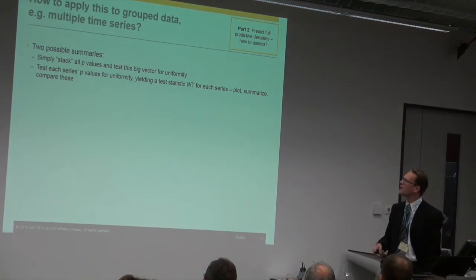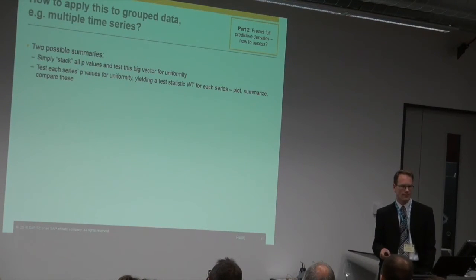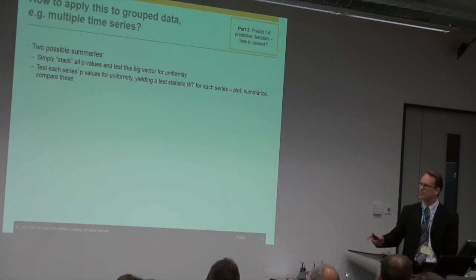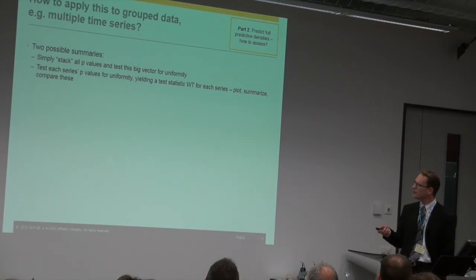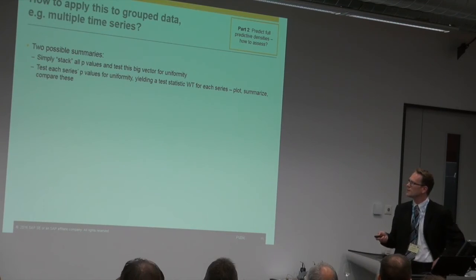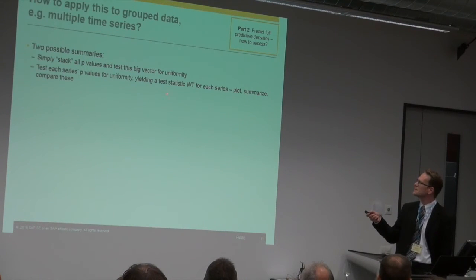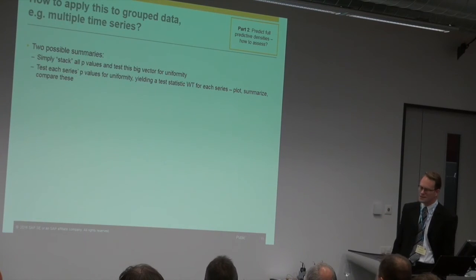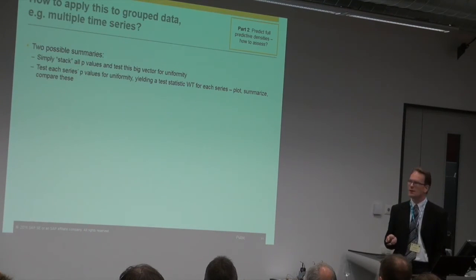How do we apply this to grouped data — multiple time series, or claim counts grouped by geography or zip code? There are simple ways: one possibility is to take all the p-values from the randomized PIT across all groups and form one giant vector of p's, then test that for uniformity. Or take each group's p-values, test each for uniformity to get a test statistic per series, and then plot and compare those. Both approaches give information about what works and what doesn't.